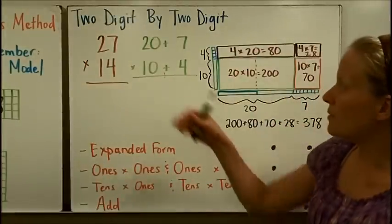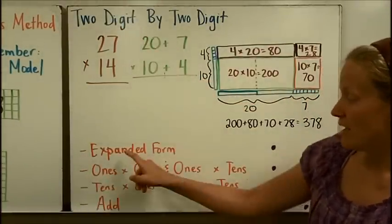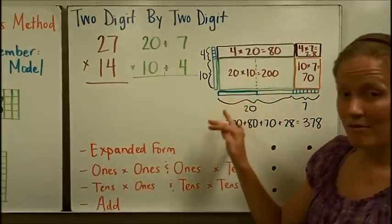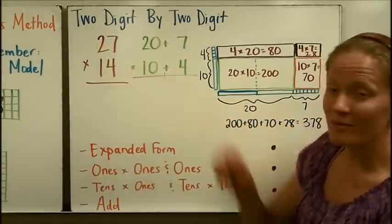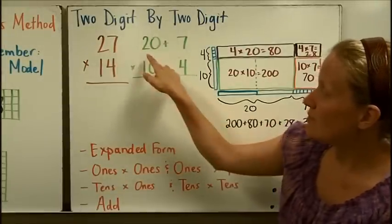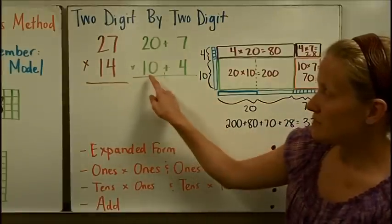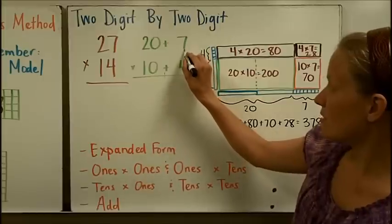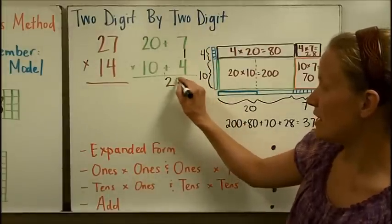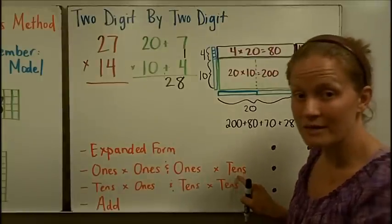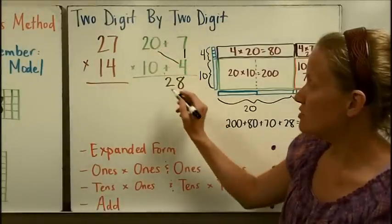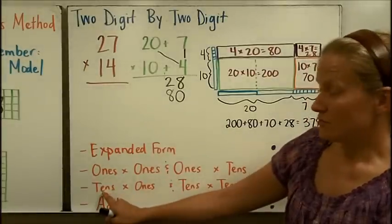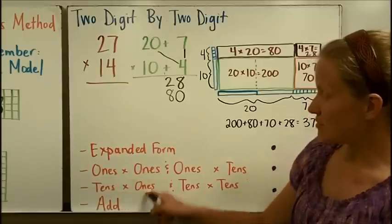I can use the same method with a two-digit by two-digit problem. I've written the directions in simplified form, and we'll show the same thing with an area model. First I write both numbers in expanded form: twenty-seven becomes twenty plus seven, and fourteen becomes ten plus four. Now I multiply the ones times the ones digit — four times seven is twenty-eight. Then the ones digit times the tens digit: four times twenty is eighty, using the zeros trick.